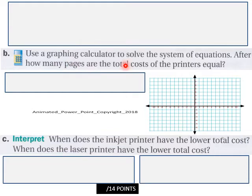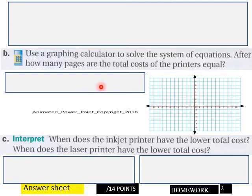And then part B, use a graphing calculator to solve the system of equations. After how many pages are the total cost of the printers equal? Do that here, you can use the grid if you want. Part C, interpret when does the laser printer have the lower total cost and calculate that down here. 14 points, page 2, page 3.